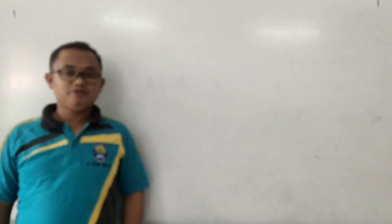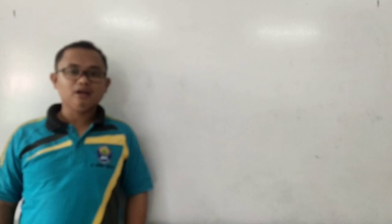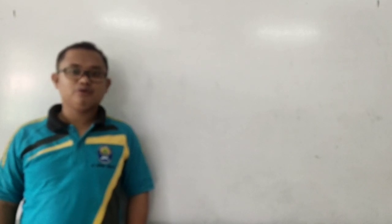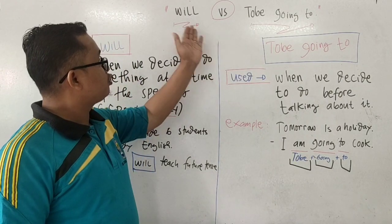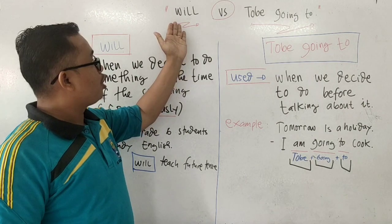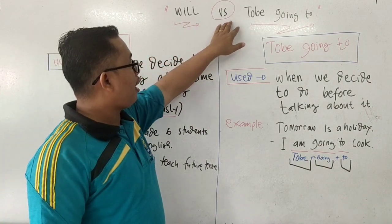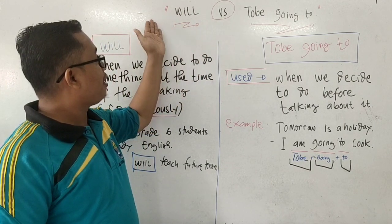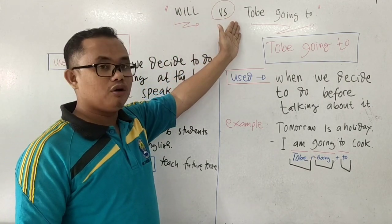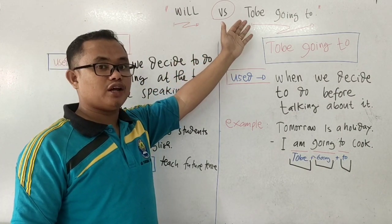Yesterday, Mr. Jimmy introduced us to future times. Today, we will continue with the differences between the use of 'will' and 'to be going to.' Both 'will' and 'to be going to' have the same meaning — 'akan' (will) — but their usage differs.